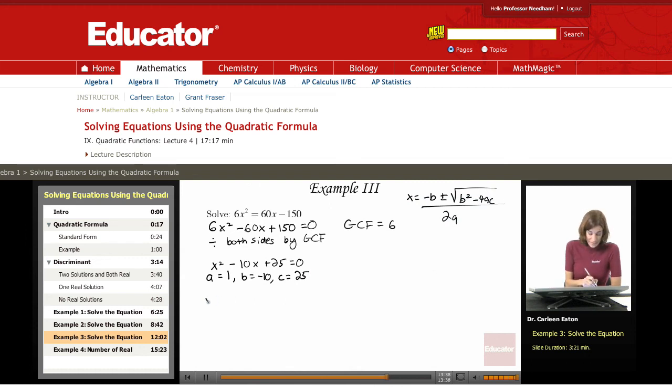Substituting that in, x equals negative b. So negative negative 10, square root of negative 10 squared minus 4 times a, which is 1, times c, which is 25, all over 2 times a, which is 1.